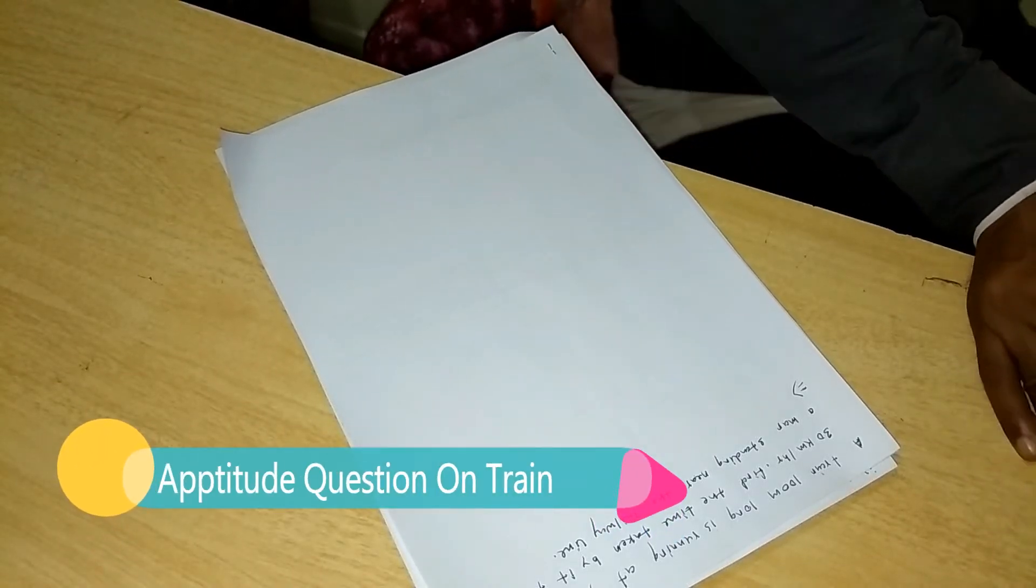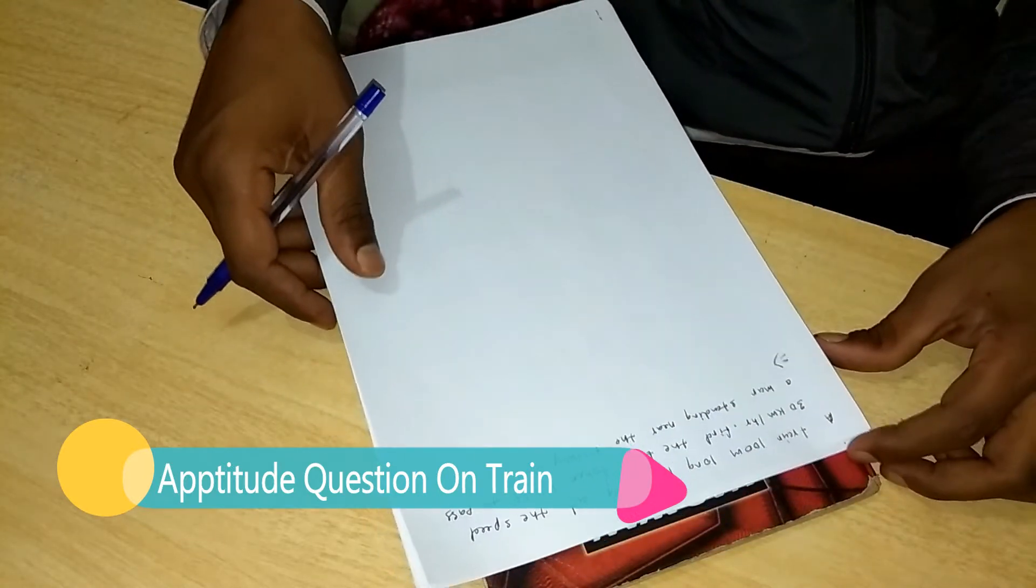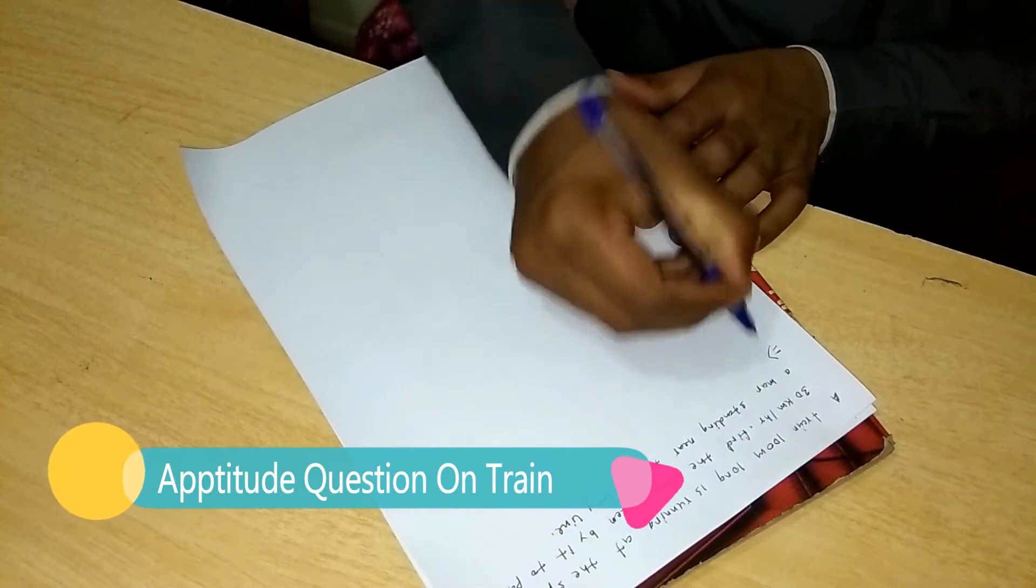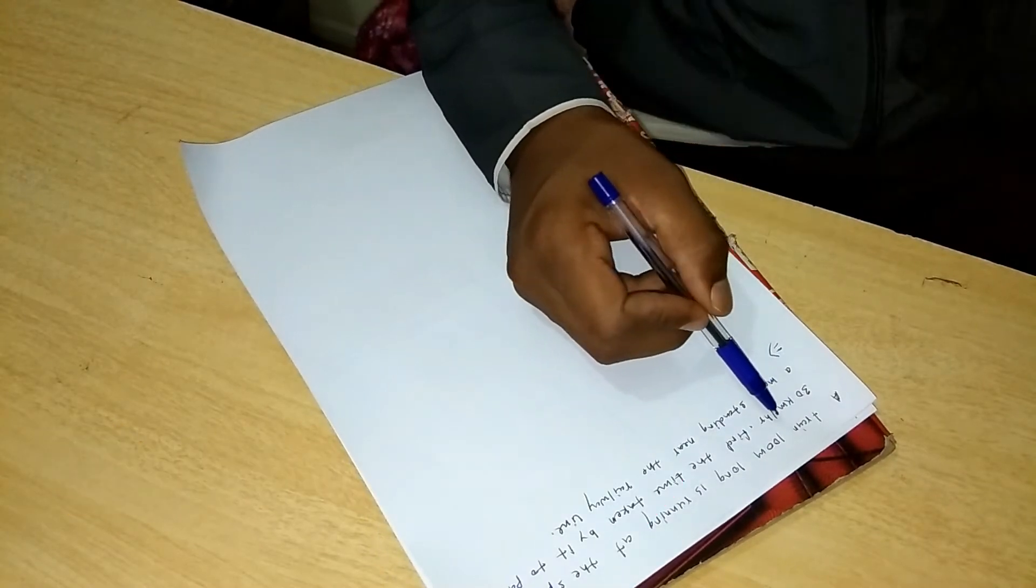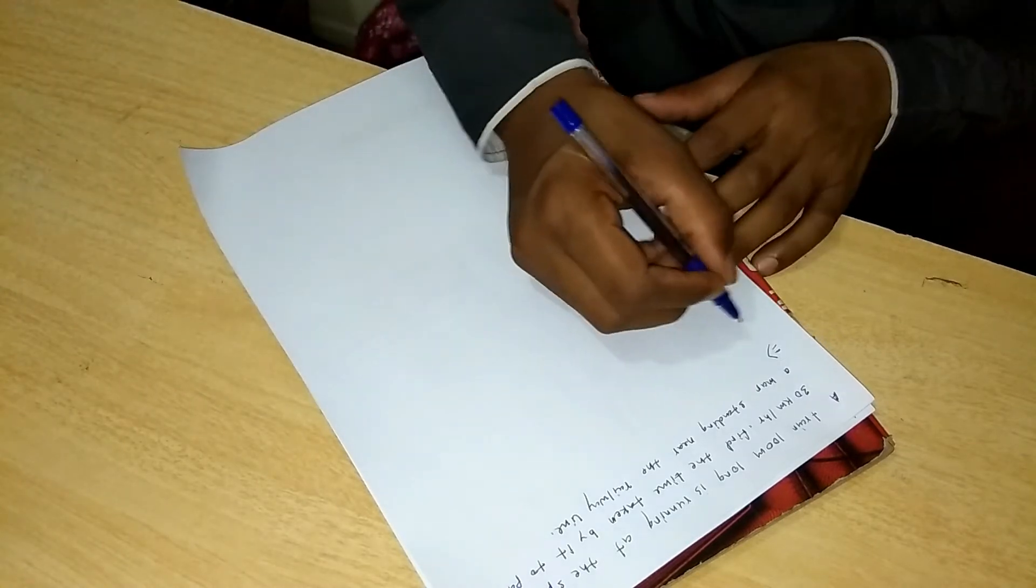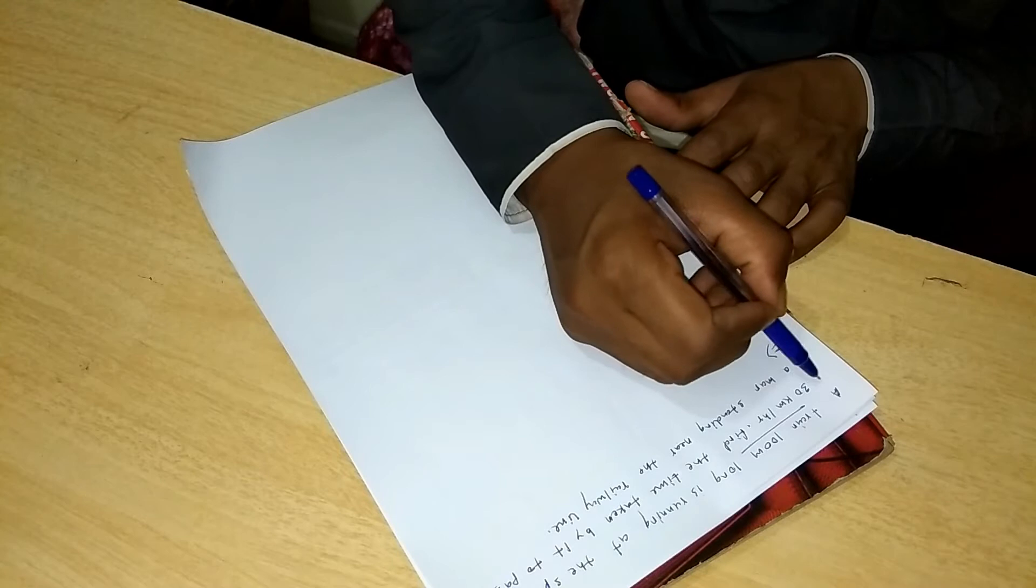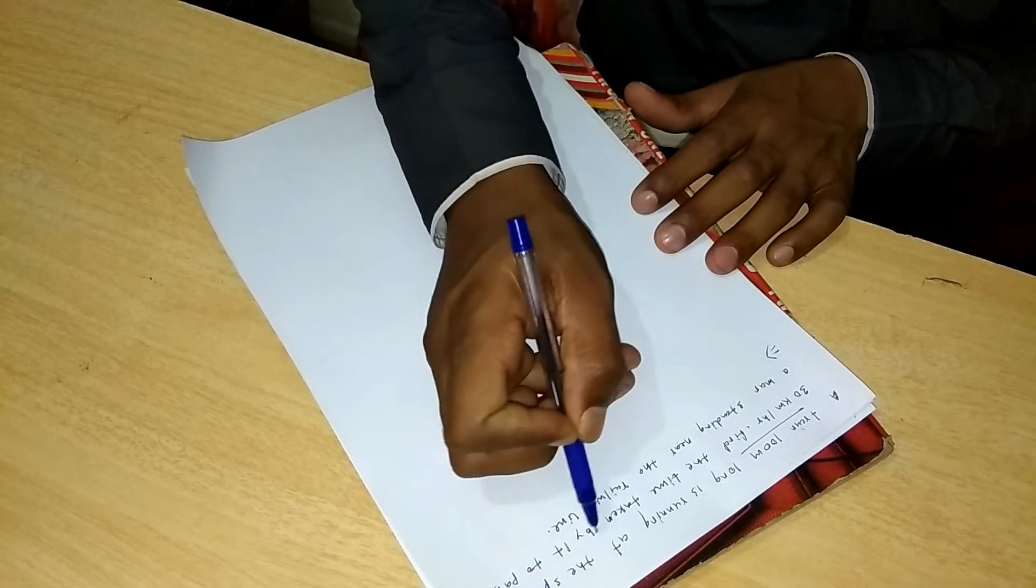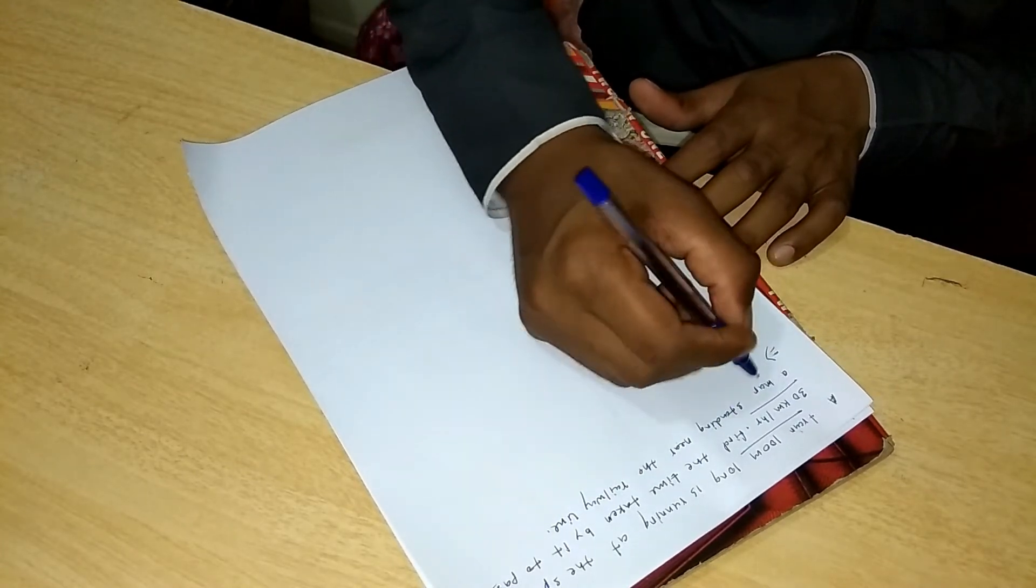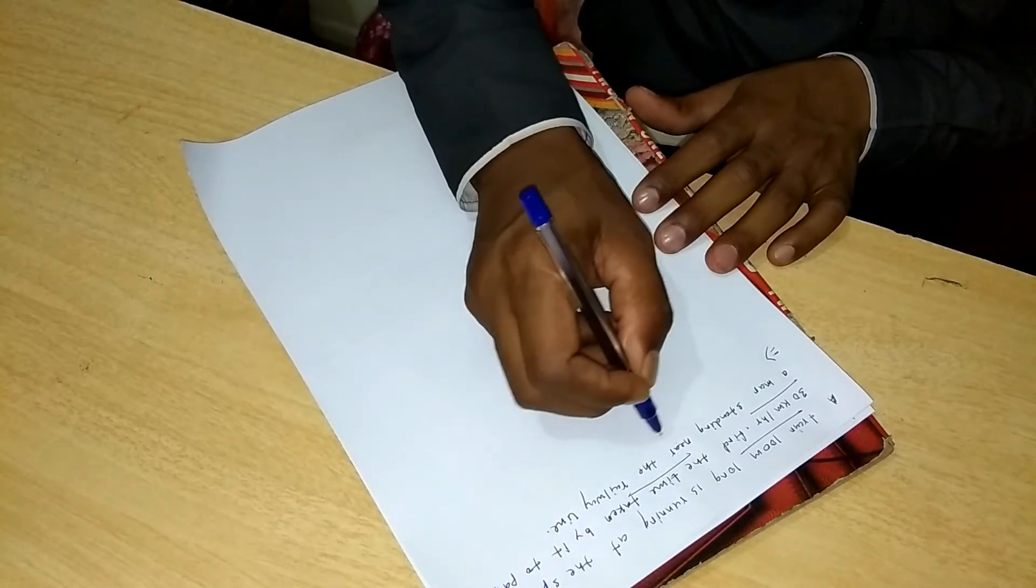Hello friends, I will show you how to solve train problems. I have one problem here. First I'm reading the problem: a train hundred meter long is running at the speed of 30 kilometer per hour. Find the time taken by it to pass a man standing near the railway line.